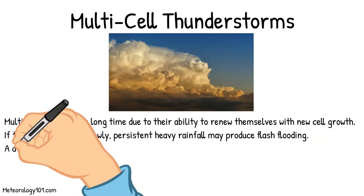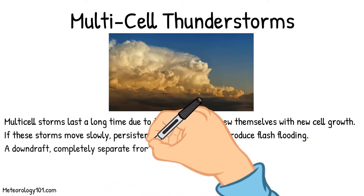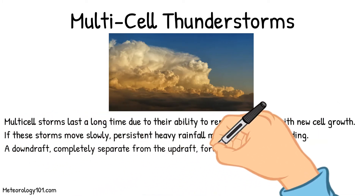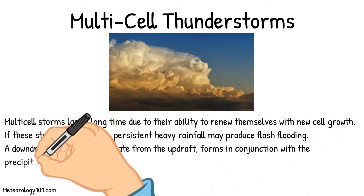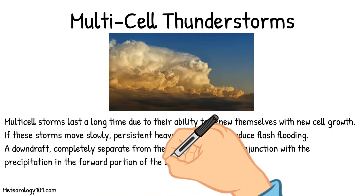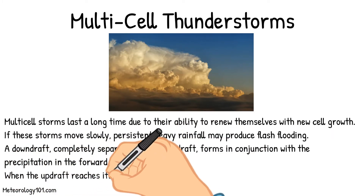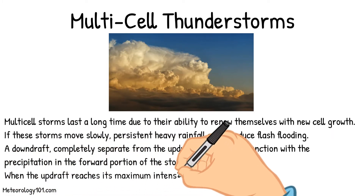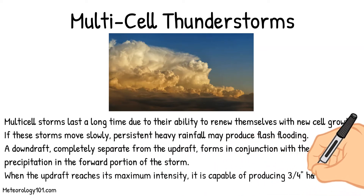A downdraft, completely separate from the updraft, forms in conjunction with the precipitation in the forward portion of the storm. When the updraft reaches its maximum intensity, it is capable of producing three-quarters of an inch hailstones.